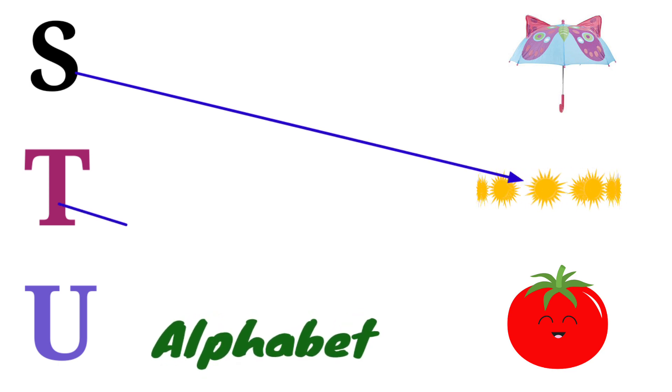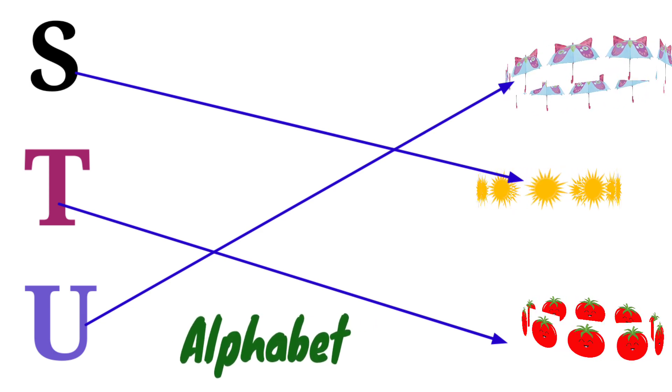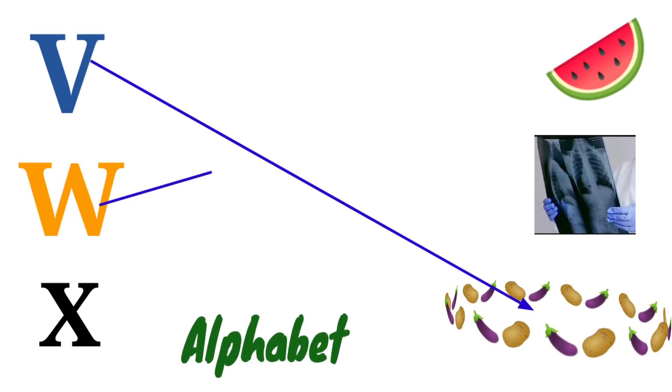S for Sun, T for Tomato, U for Umbrella.